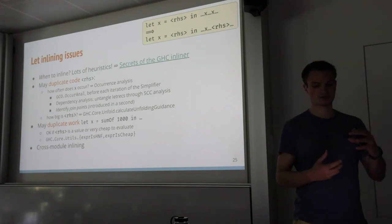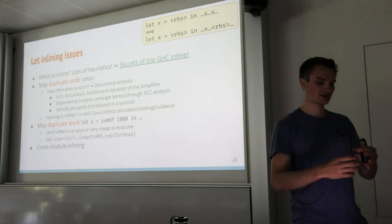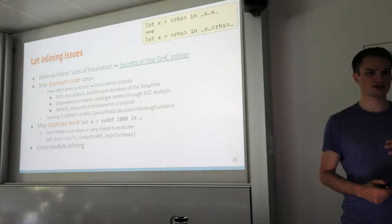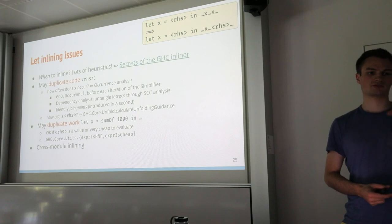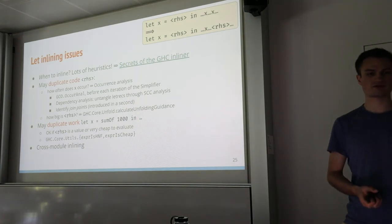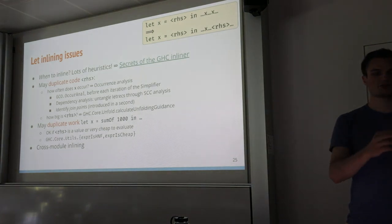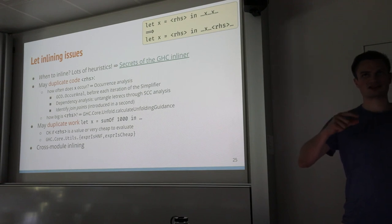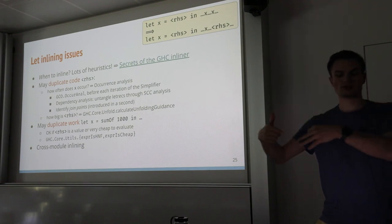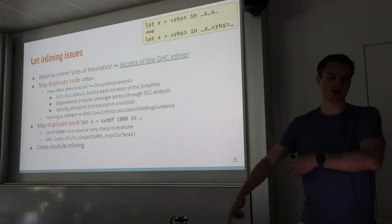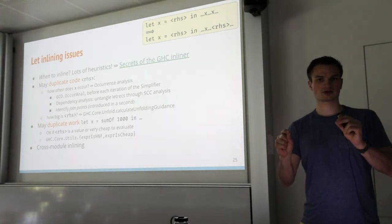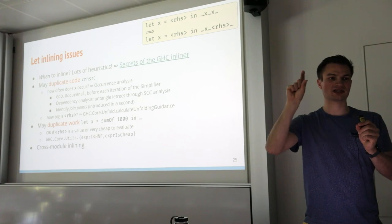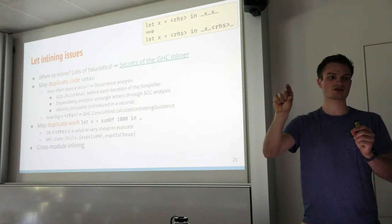The other engineering challenge with inlining is when the right-hand side is not a value but a thunk, such as sumOf 1000. If we have multiple occurrences of x on the same code path and we evaluate x multiple times, the second evaluation would reuse the memoized value. But if we inline the right-hand side, we've duplicated work. Depending on how much work that is, it might be viable to duplicate. This is governed by exprIsHNF in GHC.Core.Utils, which determines whether something is a value. Question: can the unfolding contain optimized code? With a stable inlining — when the user writes INLINE — GHC keeps the original right-hand side in the unfolding even if the optimized binding becomes larger.